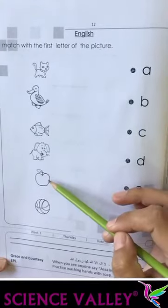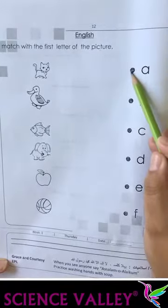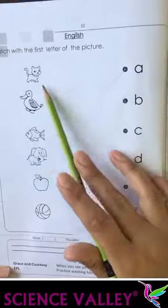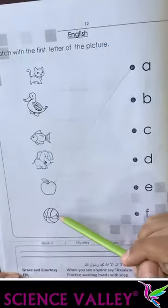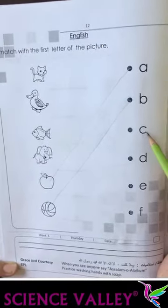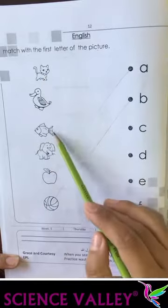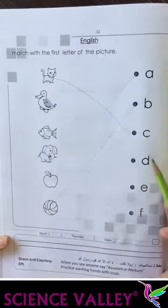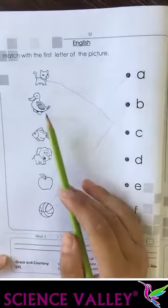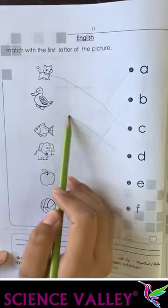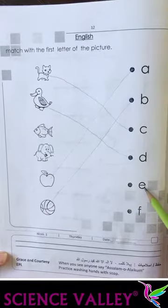First letter hai A. A apple, A apple. Second letter hai B. B se kya bannega? Cat, duck, fish, elephant, ball. Kya bannega hai B se? Ball. Ball ke sath match karengi. Third letter hai C. C se kya bannega hai? Cat. C ko cat ke sath match karengi. Now next letter hai D. D se kya bannega? The duck. Duck ke sath match karengi.